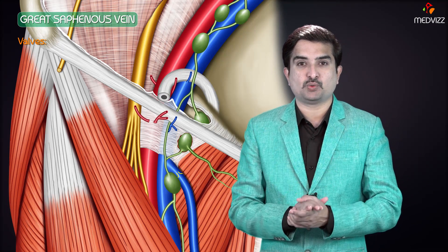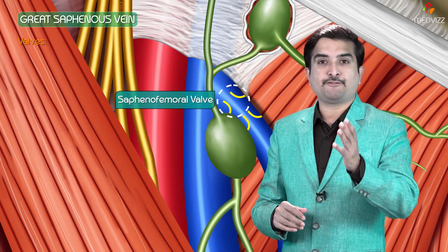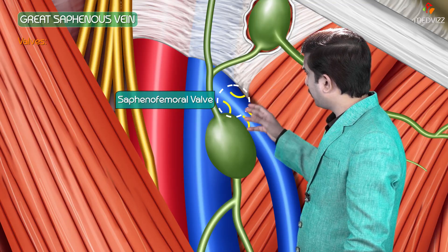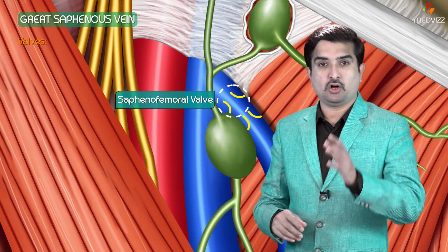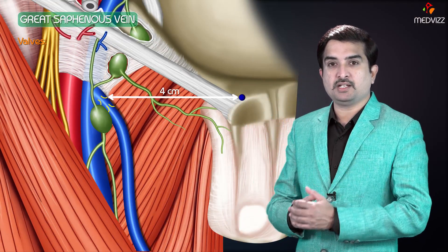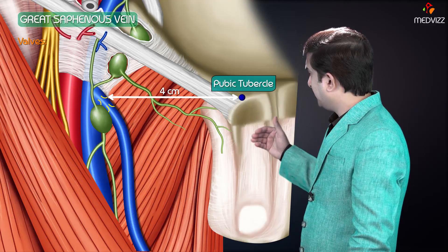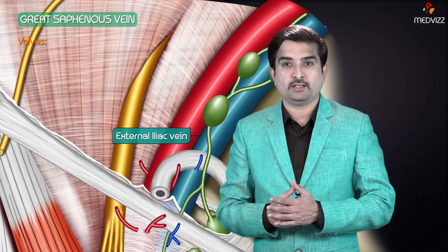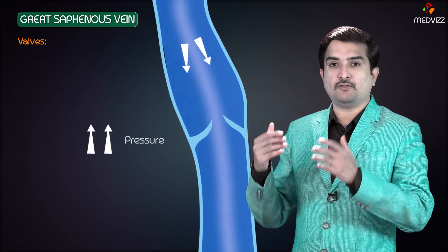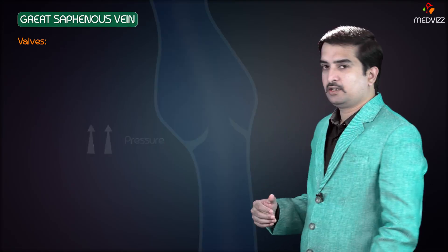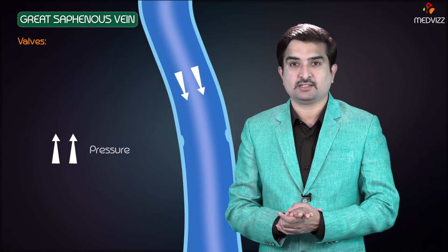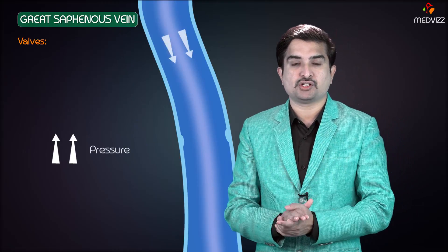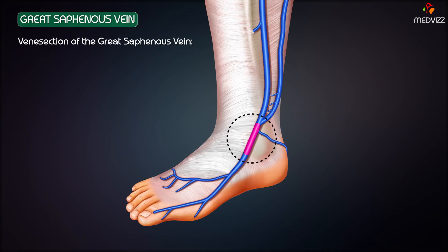Another valve lies at the junction with the femoral vein — the saphenofemoral valve. This saphenofemoral valve is of extremely great functional importance because it lies about 3.5 to 4 cm inferolateral to the pubic tubercle. In approximately 80% of individuals, the external iliac vein possesses a valve which protects the saphenofemoral valve against high venous pressure. In approximately 20% of cases who do not have this valve, they become victims of high venous pressure and develop varicose veins.